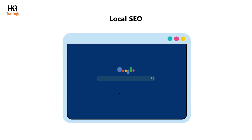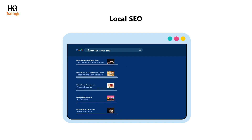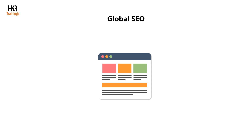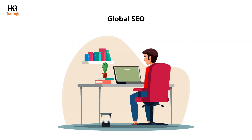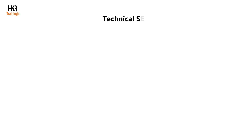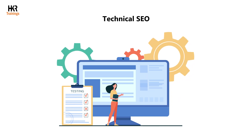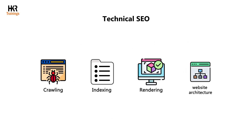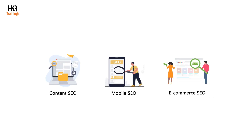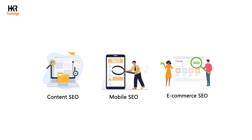Local SEO is an approach that makes your business appear more prominently in Google's local search results. Global SEO enables you to create and optimize content for international markets, so international users can find your website and your content appears on the first page of their search results, increasing conversions. Technical SEO is the process of ensuring a website complies with the technical standards of search engines to enhance organic rankings — covering crawling, indexing, rendering, and website architecture. Other SEO types include content SEO, mobile SEO, and e-commerce SEO.